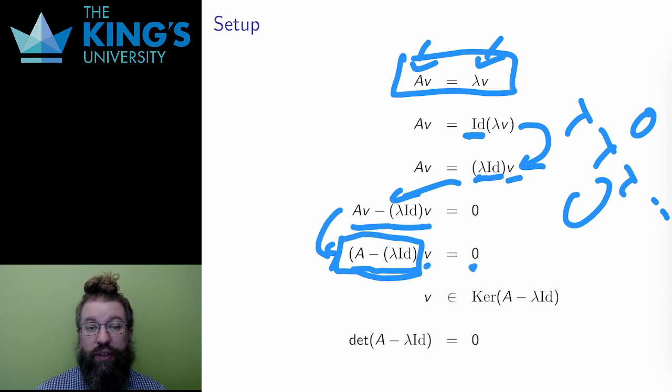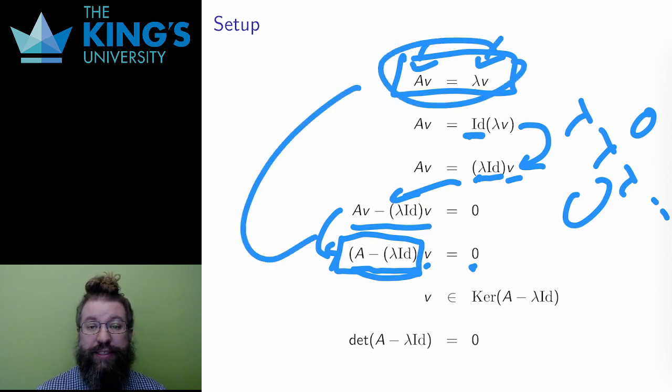This is an equivalent definition. V is an eigenvalue of A if A minus lambda identity sends v to zero. Being sent to zero means that v is in the kernel of the matrix A minus lambda identity. If there is a vector in this kernel, and remember that the eigenvector v is always a non-zero vector, then using the properties of invertible matrices, the kernel is at least one dimensional. That means that the matrix is not invertible, and that means that the matrix has determinant zero.